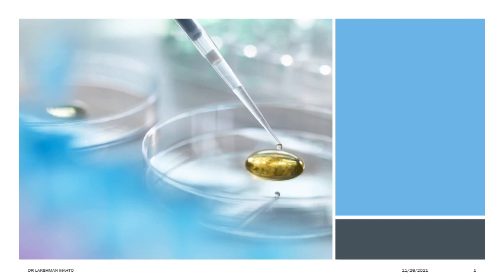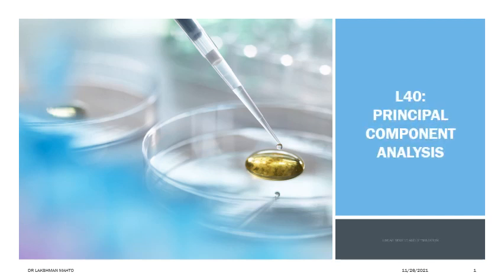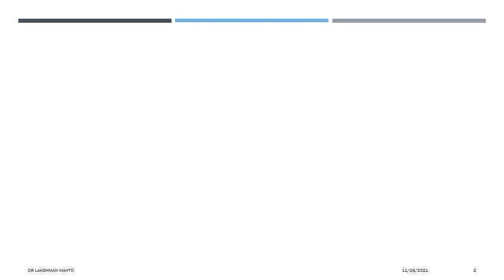This is lecture number 40, where we will discuss Principal Component Analysis. If time permits, we will also cover various derivations for PCA. In the next few lectures, I will talk about applications of PCA. Today's outline covers motivation, introduction, and a few concepts from random vectors.